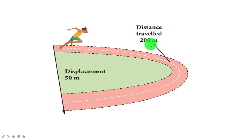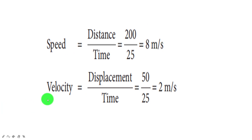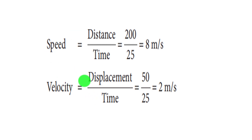Consider this picture: a person travels a total distance of 200 meters but the displacement is only 50 meters, in a time of 25 seconds. Speed equals distance by time: 200/25 = 8 m/s. Velocity equals displacement by time: 50/25 = 2 m/s. So speed and velocity are completely different for this person.